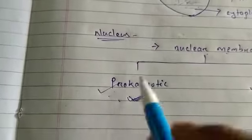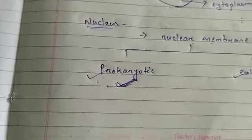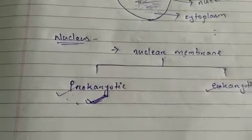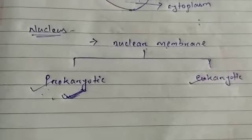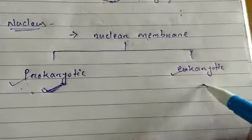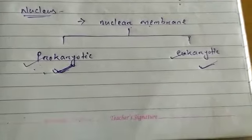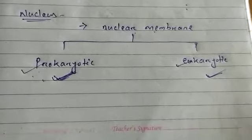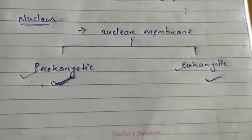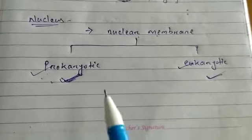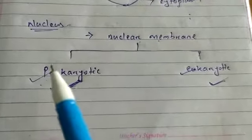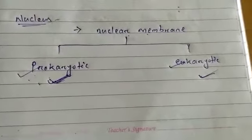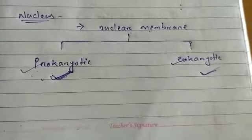Eukaryotes, like multicellular organisms such as humans and plants, are well organized and have a nucleus with a nuclear membrane. In short, organisms without a nuclear membrane are called prokaryotes, and organisms with a nuclear membrane are called eukaryotes or eukaryotic cells.